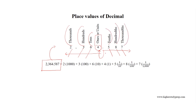Thus, the decimal number 2364.587 is equal to 2,000 plus 300 plus 60 plus 4 plus 5 tenths plus 8 hundredths plus 7 thousandths.